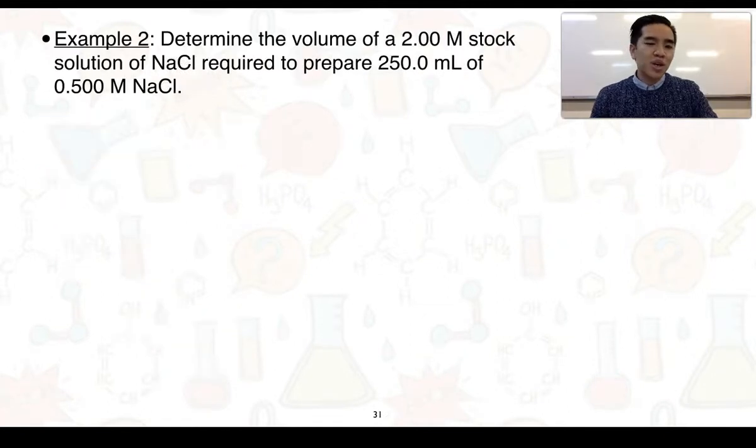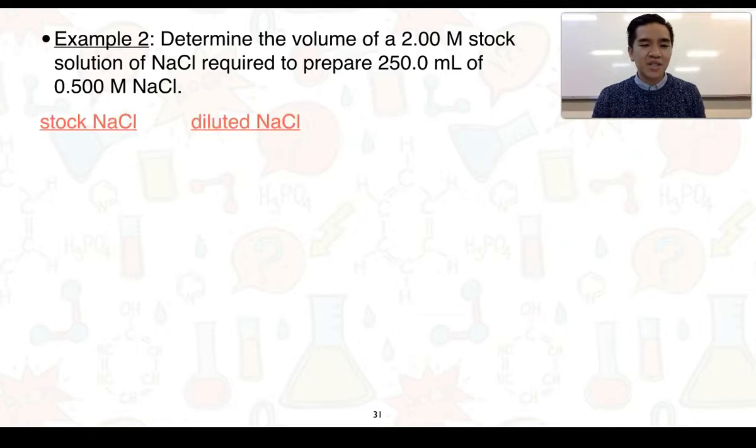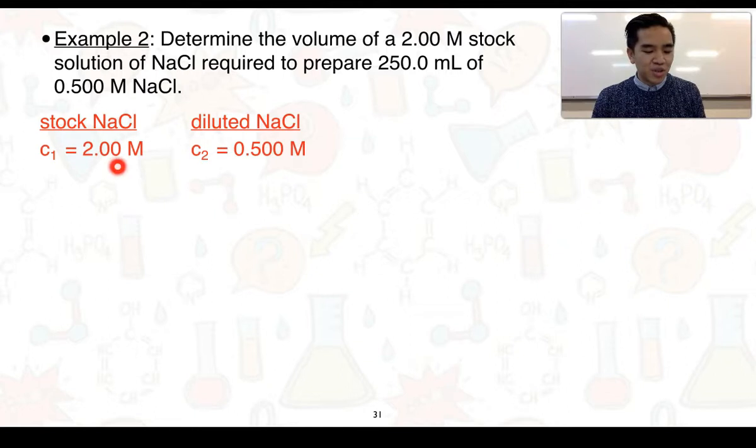In example 2 we want to determine the volume of a 2.00 M stock solution of NaCl that's required to prepare 250.0 mL of a 0.500 M concentration. Let's go ahead and list the information that's presented: stock solution and diluted solution. We know we've got a concentration of 2.00 molar for our stock. We want to dilute that to 0.500 molar for our NaCl.